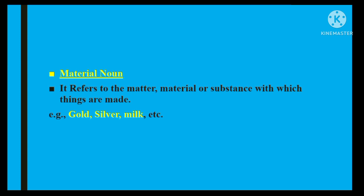Material noun aisa noun hota hai jis ki koi physique ho, jo wazan rakhta ho, jo jagah ghair sakta ho — jaise matter ki definition hai ke matter aisi cheez hai jis ka wazan ho, jo jagah ghair sake, aur uski koi shakl ho. Isi tarah material noun bhi jis ka wazan ho sakta hai. Examples: gold, silver, milk, etc. Material aur abstract noun ek doosre ke opposite hain.